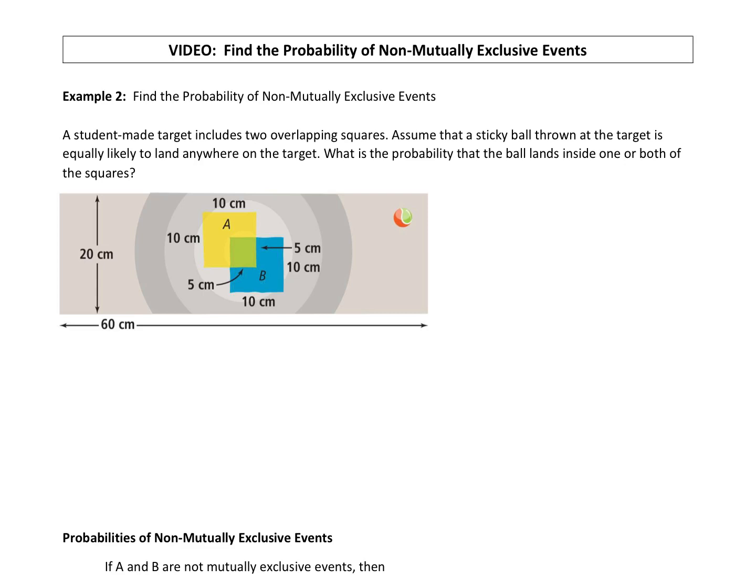We've looked at examples with mutually exclusive events that don't have any outcomes in common. So how about when they do? Non-mutually exclusive events.